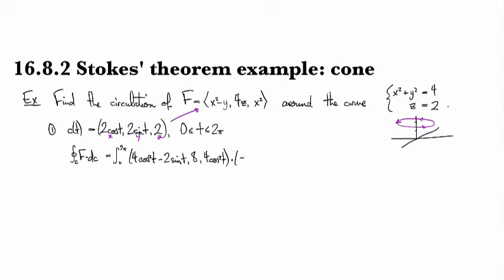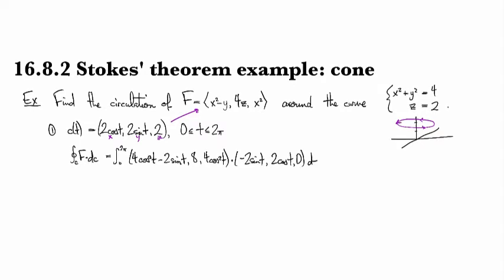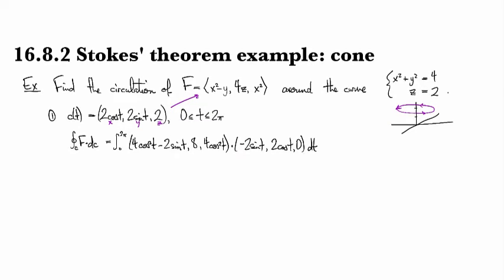And that's going to be dotted with the derivative of Ct. So that's going to be -2 sine t, 2 cosine t, and then 0 dt.